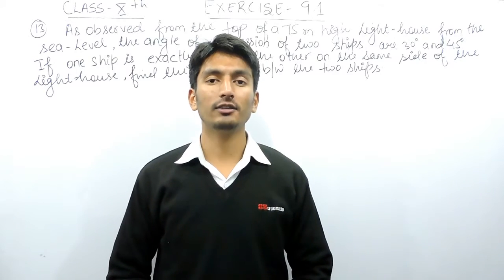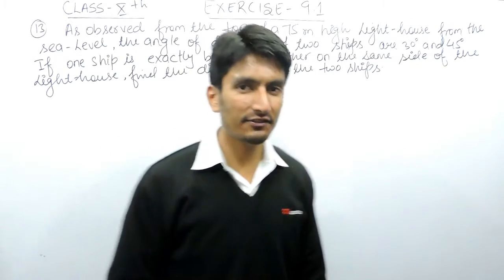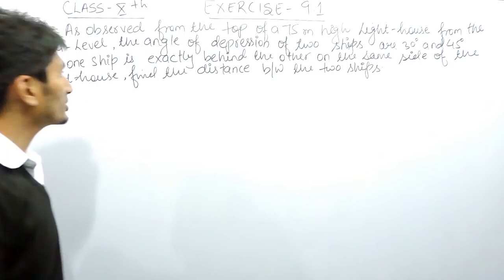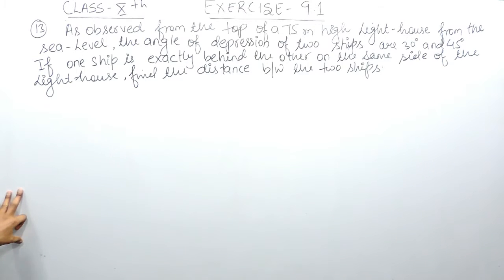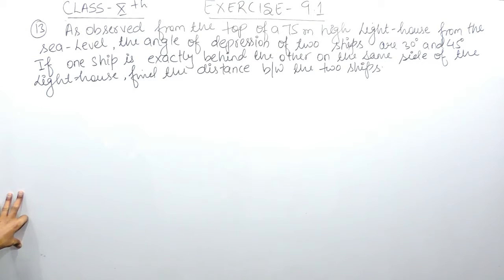Hello everyone, we are from Truman's and in this video we are going to solve question number 13 of exercise 9.1. The question says: as observed from the top of a 75 meter high lighthouse from the sea level, the angle of depression of two ships are 30 degrees and 45 degrees. If one ship is exactly behind the other on the same side of the lighthouse, you have to find the distance between the two ships.